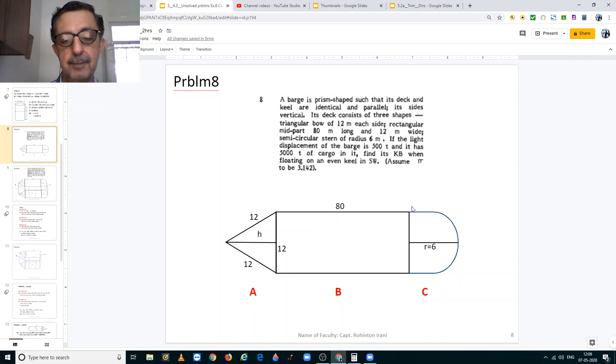So here we have the picture. We have the triangular bow, each side is 12 meters. That is 12, 12, 12.